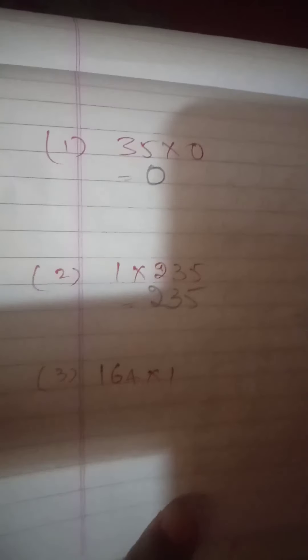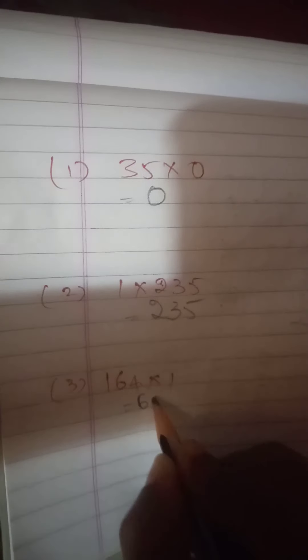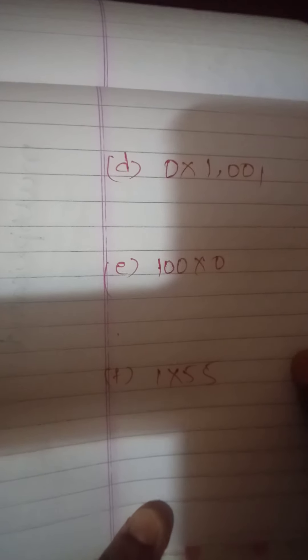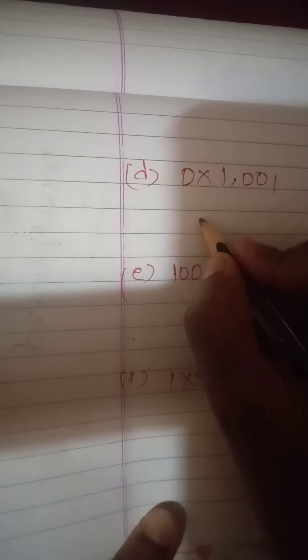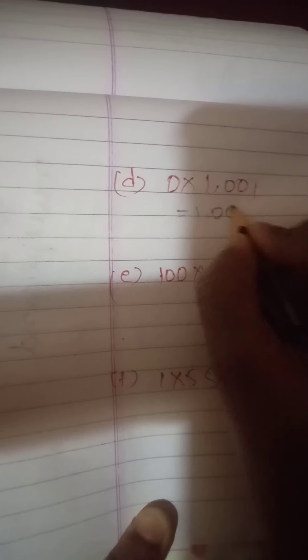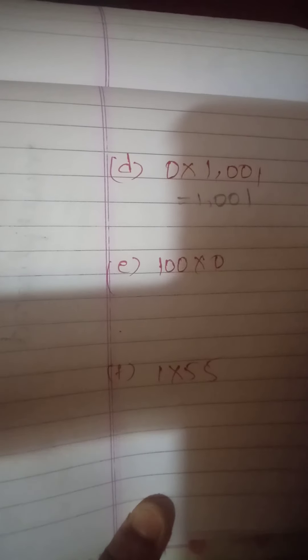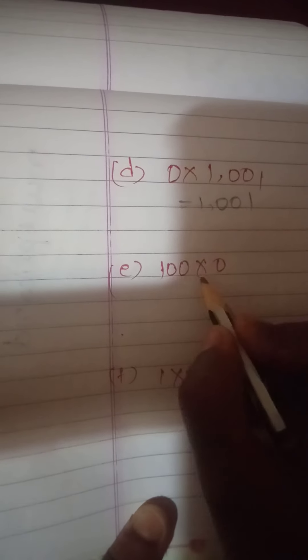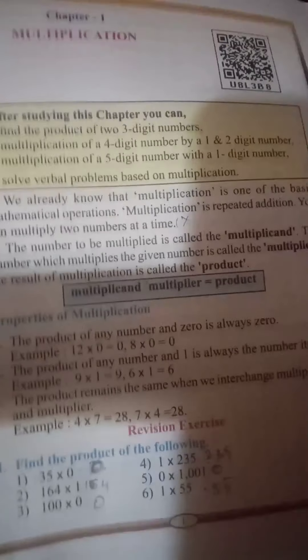Third question: 164 into 1 is 164. Next: 0 into 1001 — answer is 0. Next: 1 into 10010. Next: 1 into 51. Next: 1 into 53. Next: 1 into 55 — answer is 55.